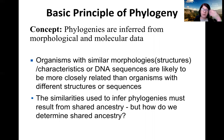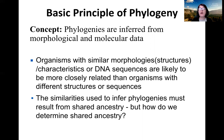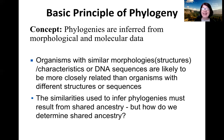To make an analogy: you're likely to look more like your siblings than your third cousins because you're more closely related to your siblings. You're more likely to look like your parents than your great-great-great-great grandparents. The similarities we use to infer phylogenies must result from shared ancestry. Remember the similarities between snakes and legless lizards — those similarities are the result of convergent evolution. They are analogous structures, not homologous structures, so they're not the result of shared ancestry.